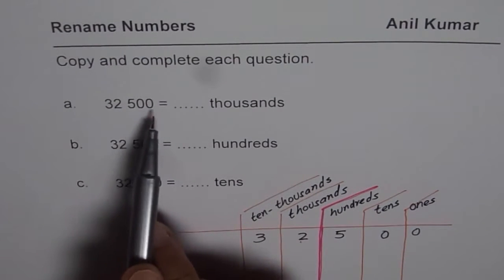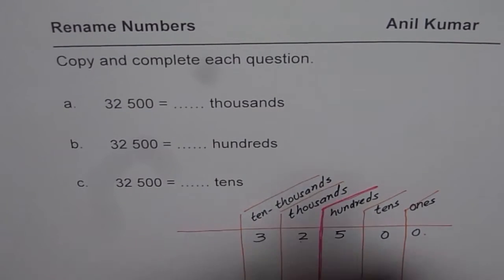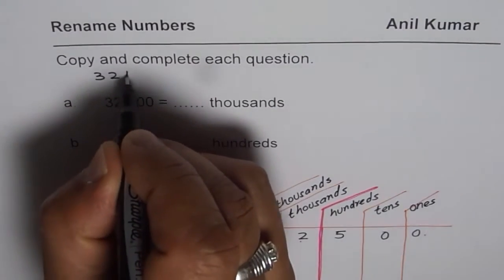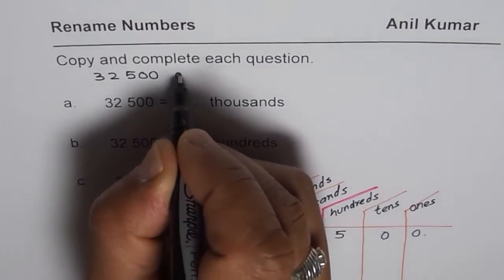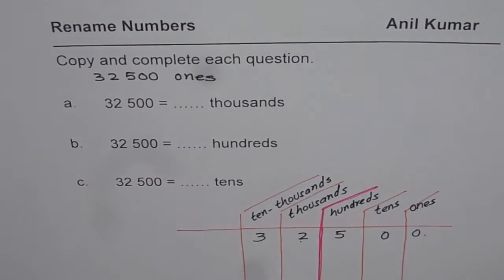So 32,500 that ends at ones is actually these many ones. So let me write this as the number 32,500 ones. This is the number which we are trying to rename.